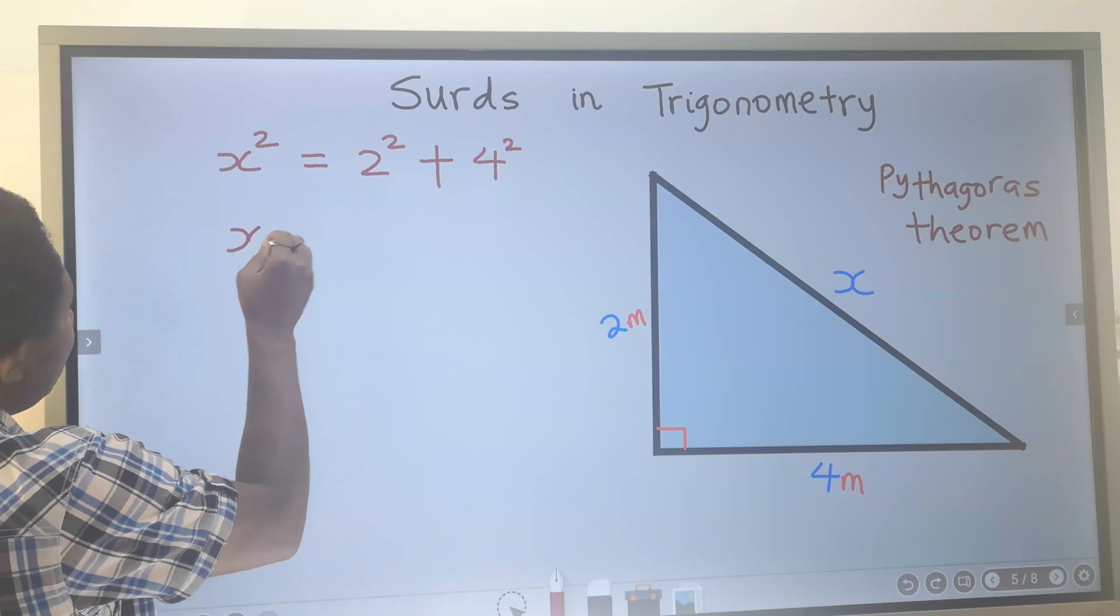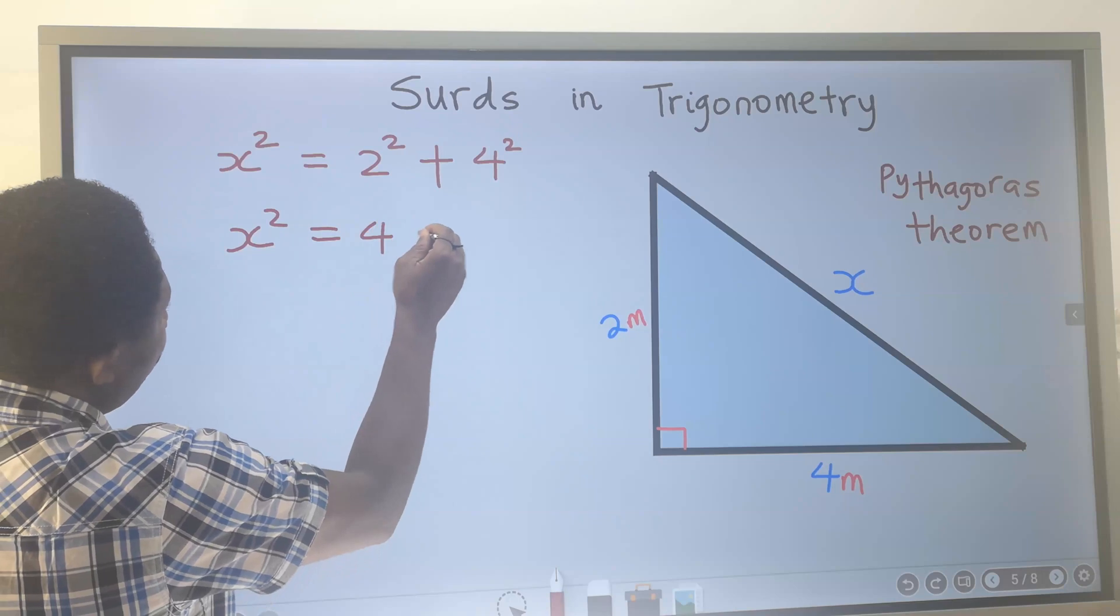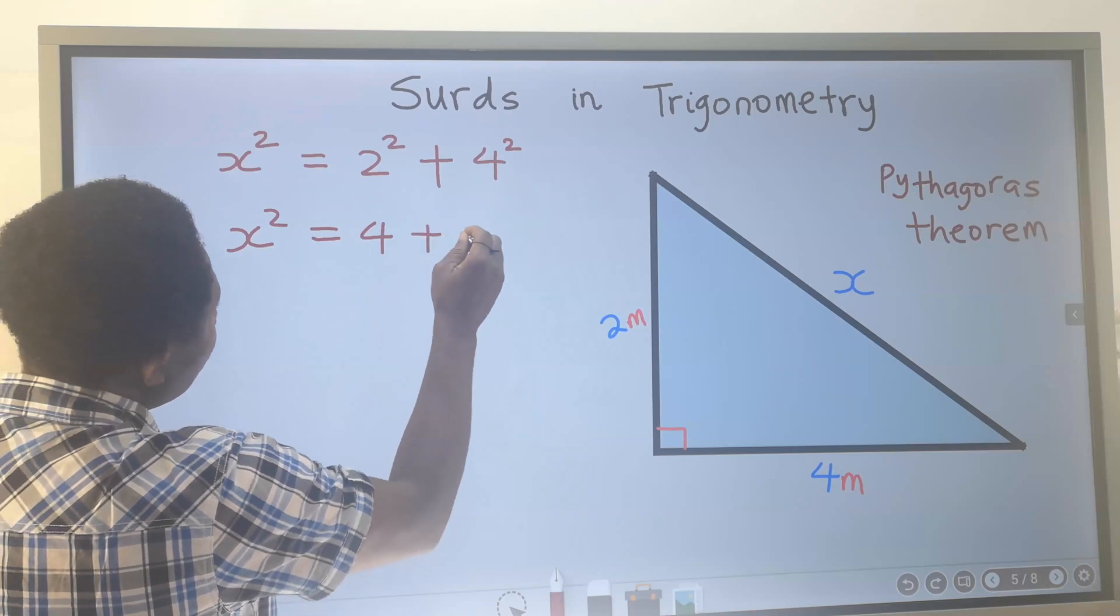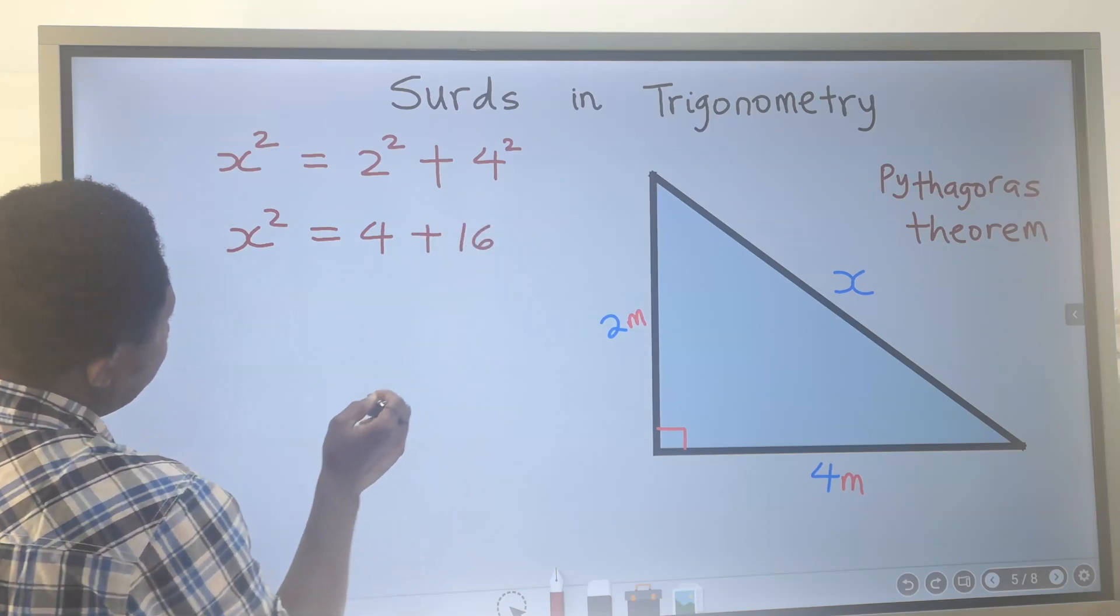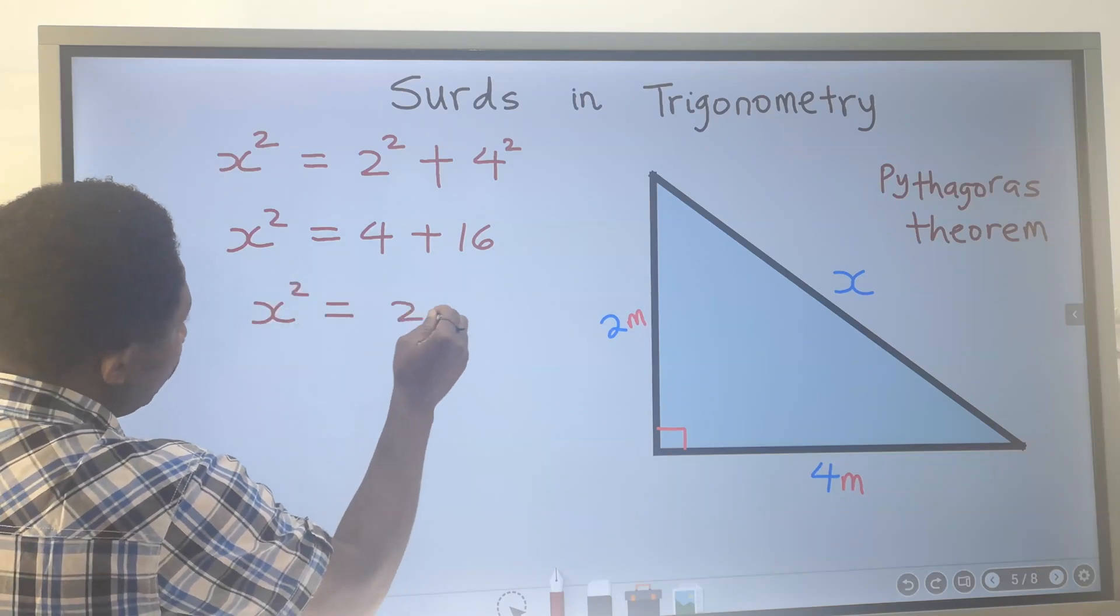Next, this is x squared. 2 squared is 4, plus 4 squared is 16. Next, we are going to have x squared is 20.